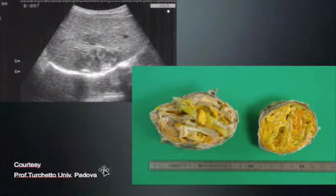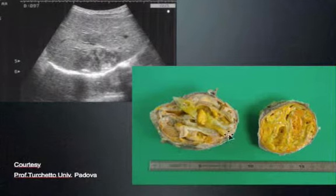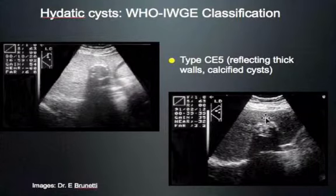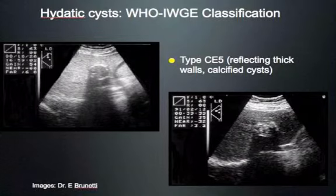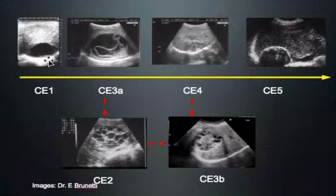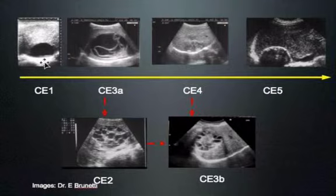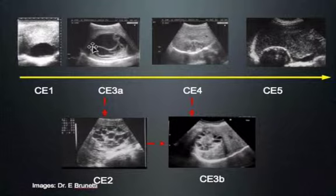CE4 is heterogeneous with mainly hyperechoic content — mainly condensed, consolidated material. CE5 develops calcification with shadowing. The natural course of disease starts as CE1 — a young echinococcal cyst. When the host's immune system or albendazole treatment favors the host, the inner cyst detaches, slowly consolidates, and eventually calcifies, progressing CE1 → CE3a → CE4 → CE5.